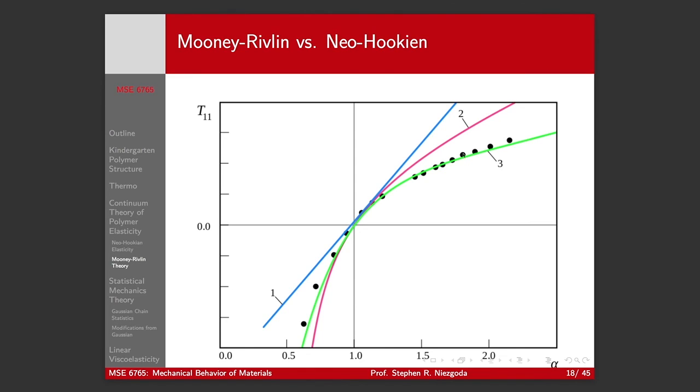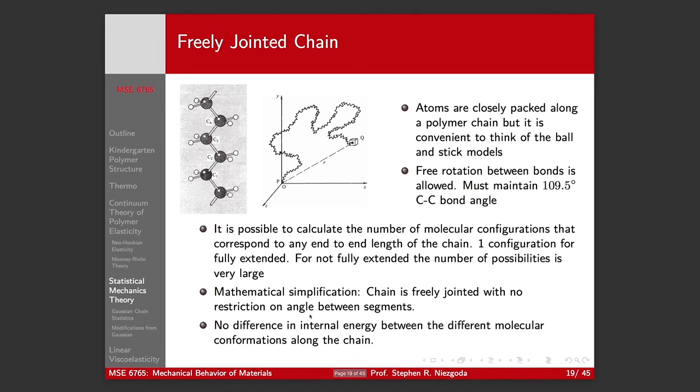So, here's the one curve here, this is the Hooke's law. This two curve, this is Neo-Hookian behavior. And, this third curve, this is Mooney-Rivlin. And, you can see that the Mooney-Rivlin model captures the behavior, the extension compression behavior for this particular polymer.